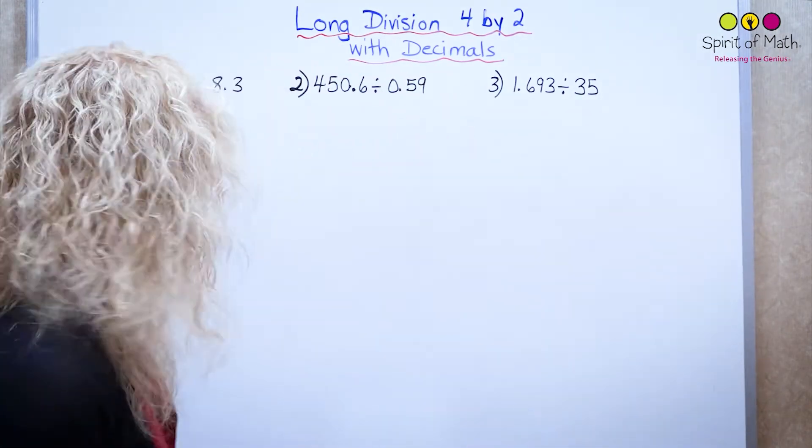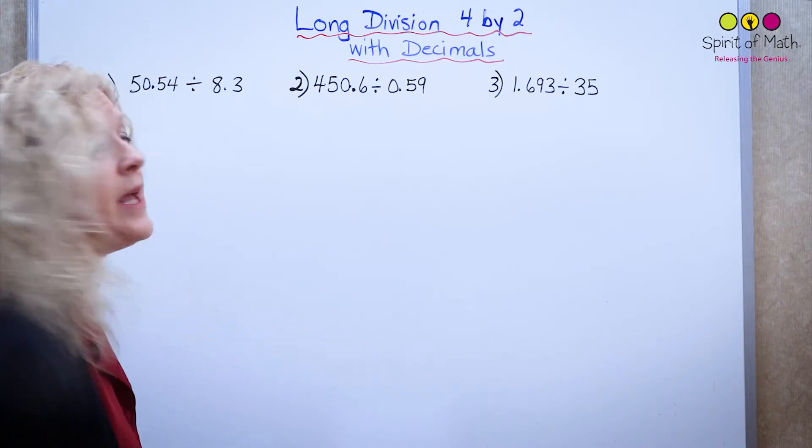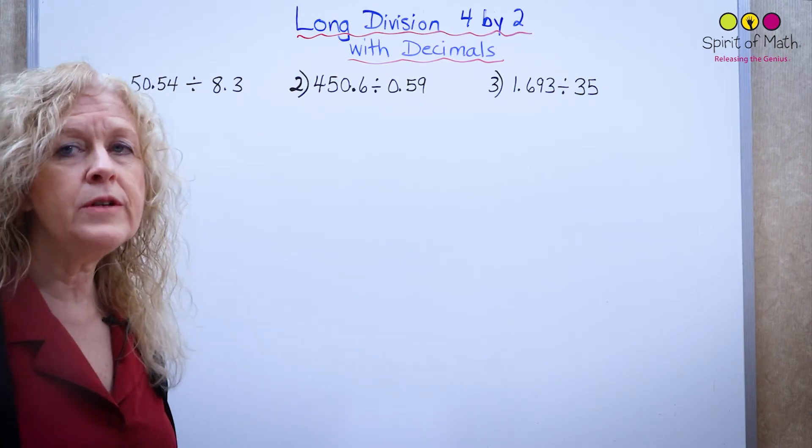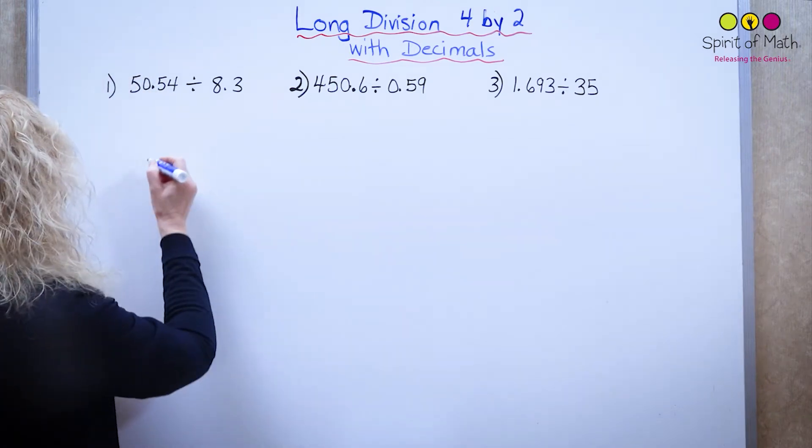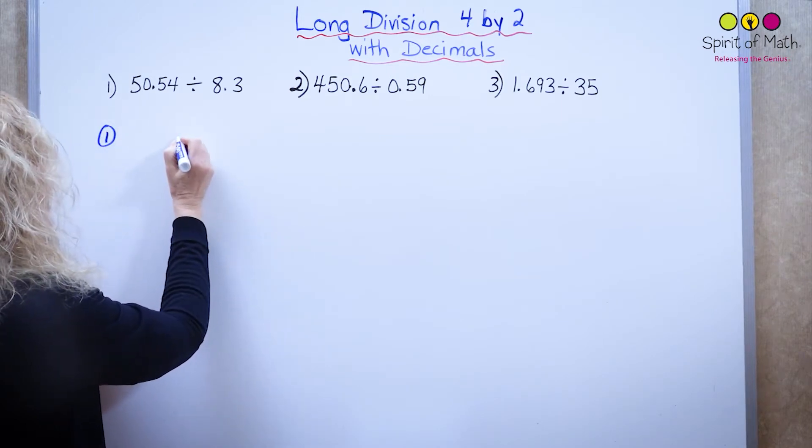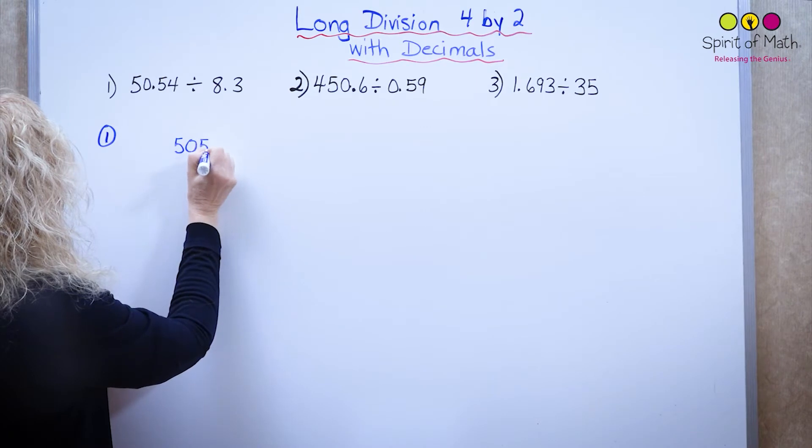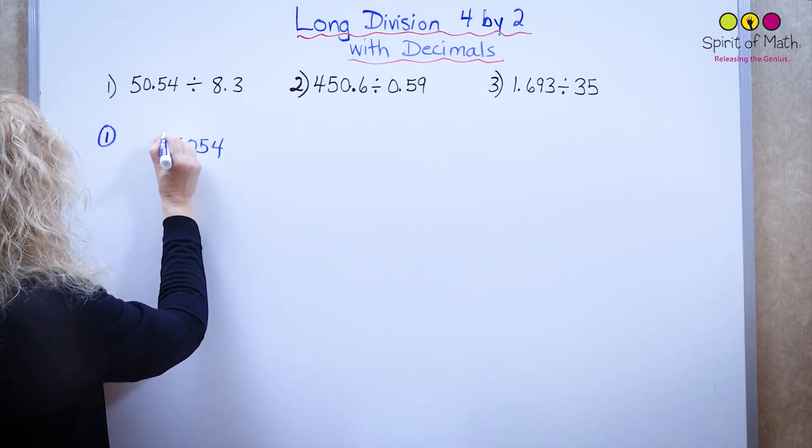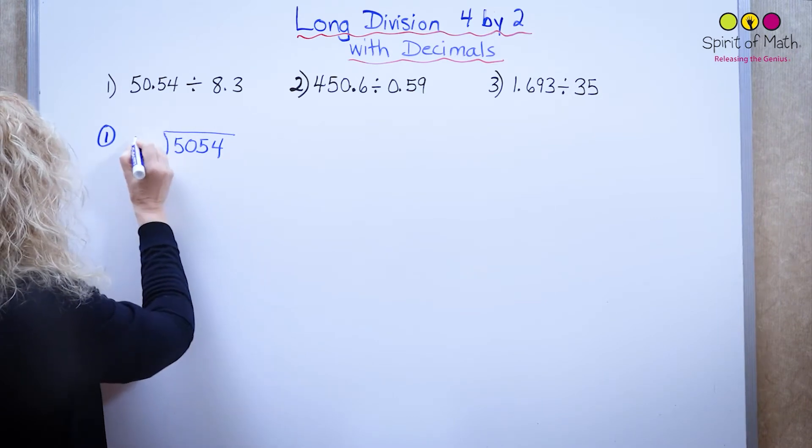Let's have a look at the numbers. The very first one shows 50.54 divided by 8.3. The first thing is that you set it up the same way as when you have numbers without decimals to begin with. So I'm going to write question number one, and I have 5054. Notice I haven't put the decimals in yet, and then I'm going to divide that by 83.